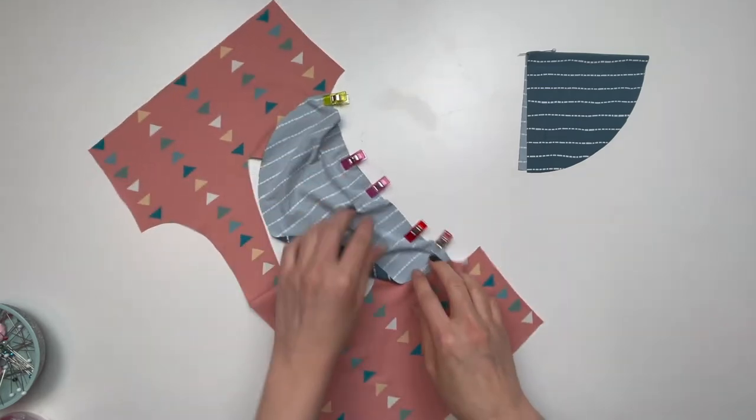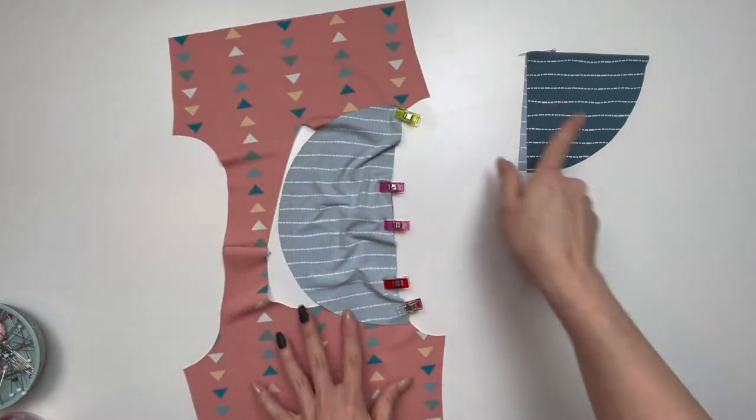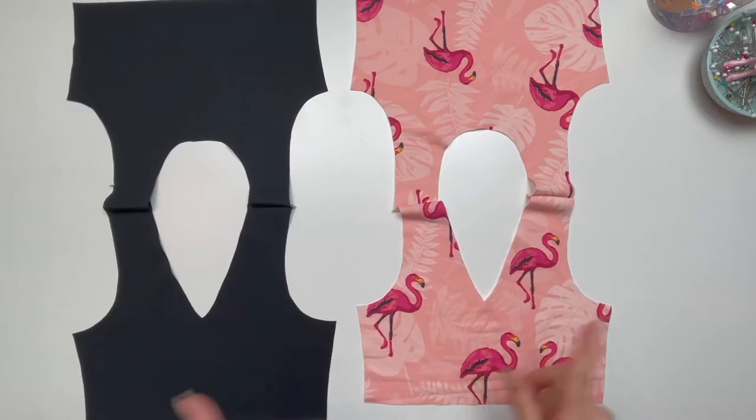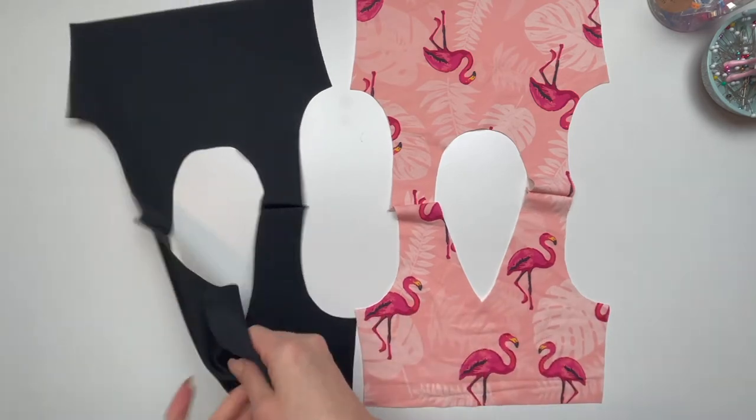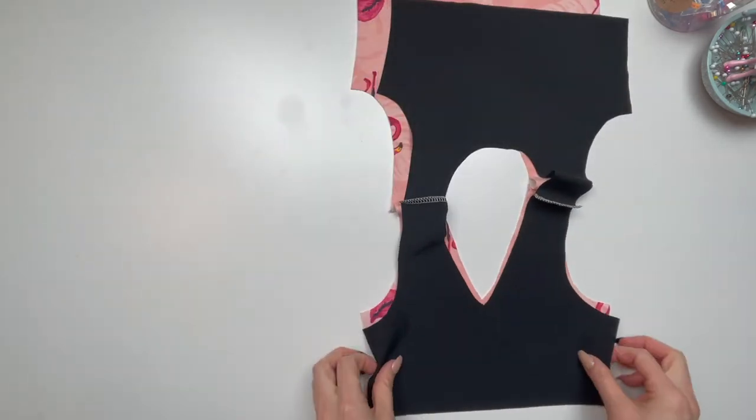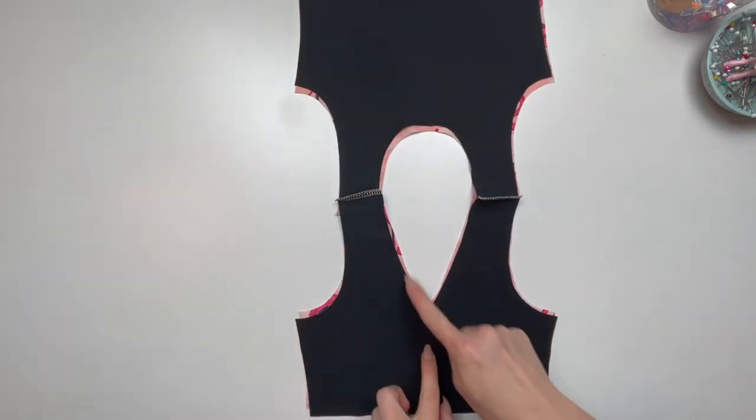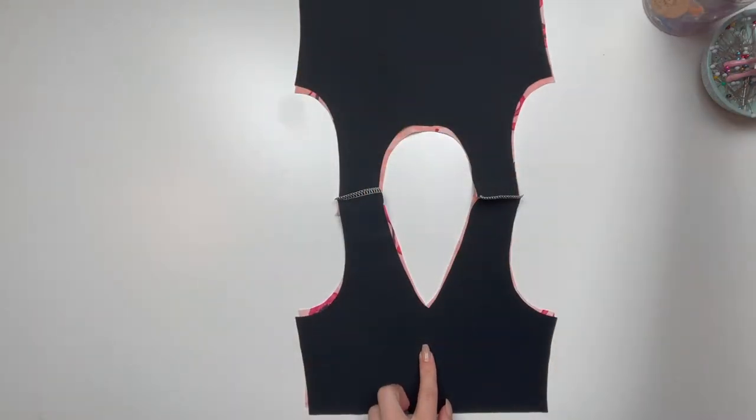Baste along the flutter sleeve using a quarter inch seam allowance. Repeat this process with your remaining flutter. Place your main and lining fabric right sides together. Pin or clip around the neckline of the bodice.